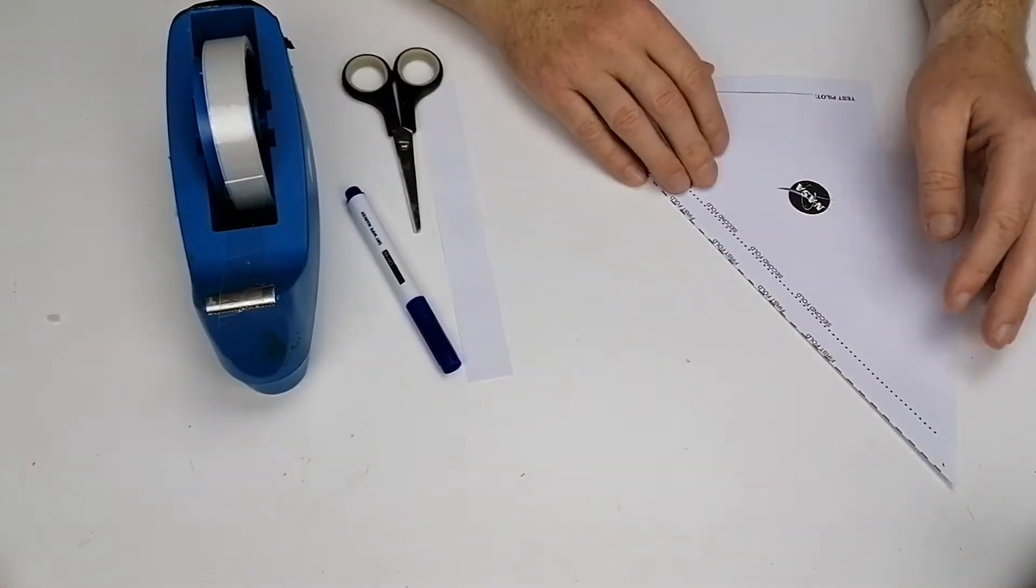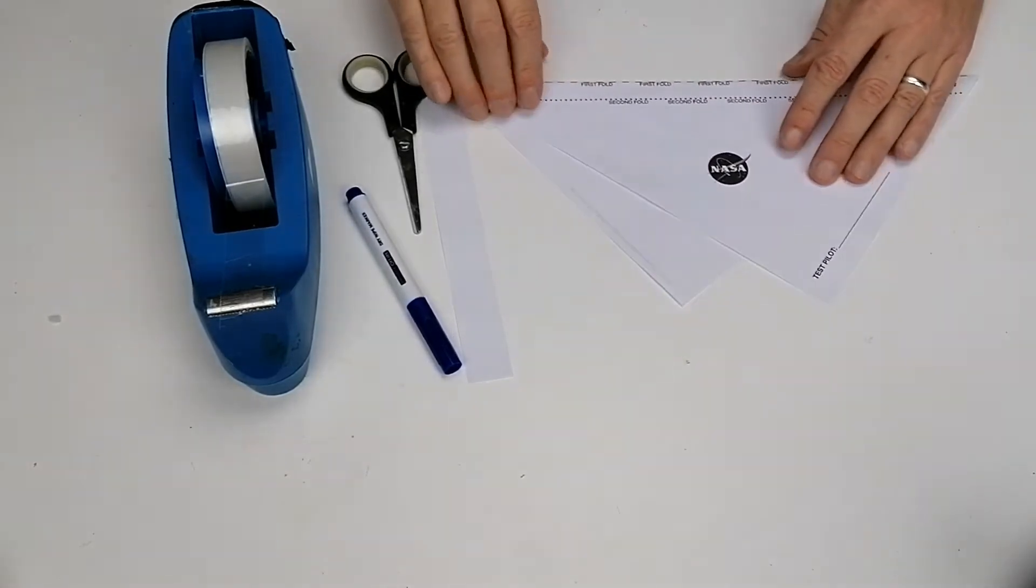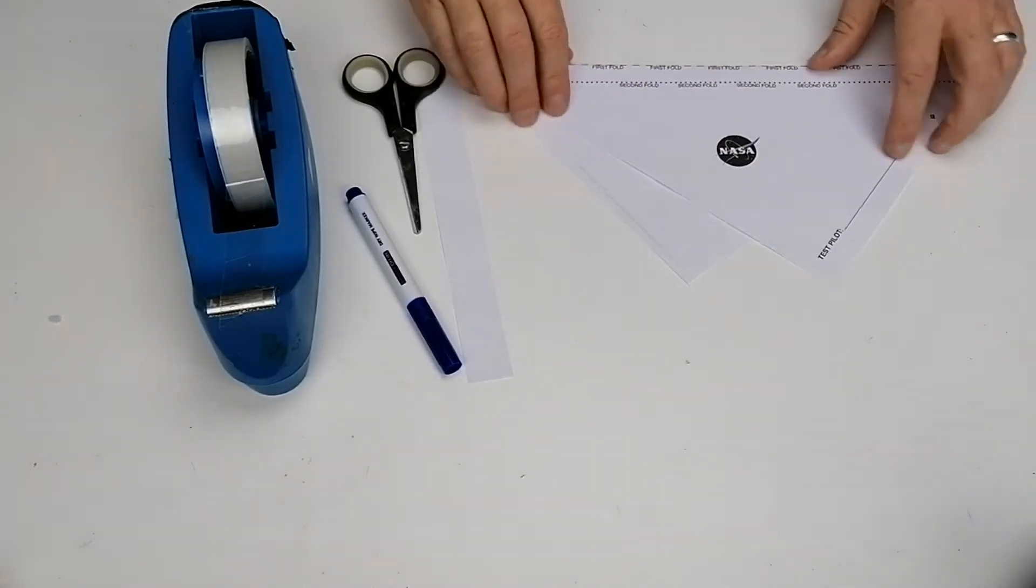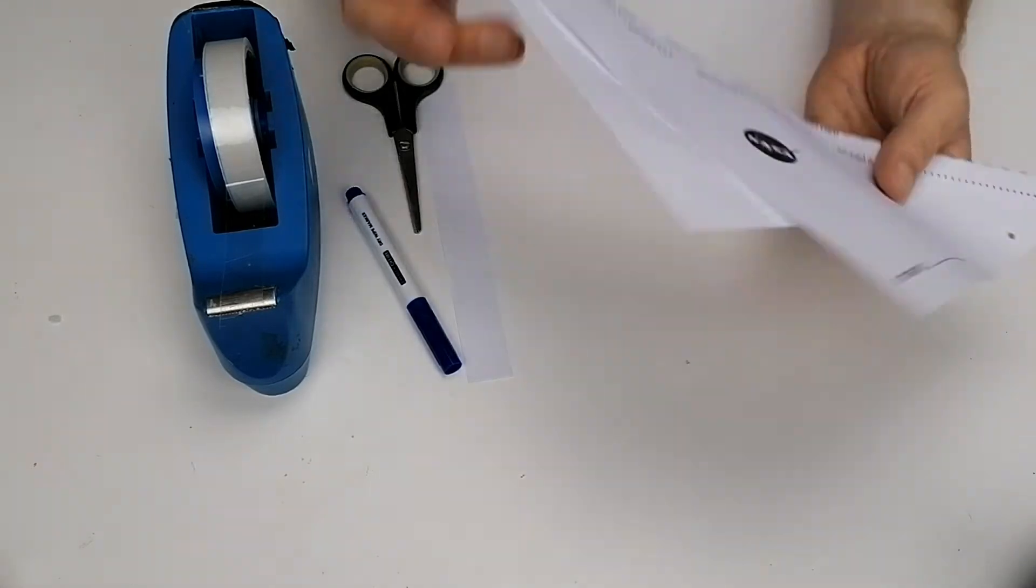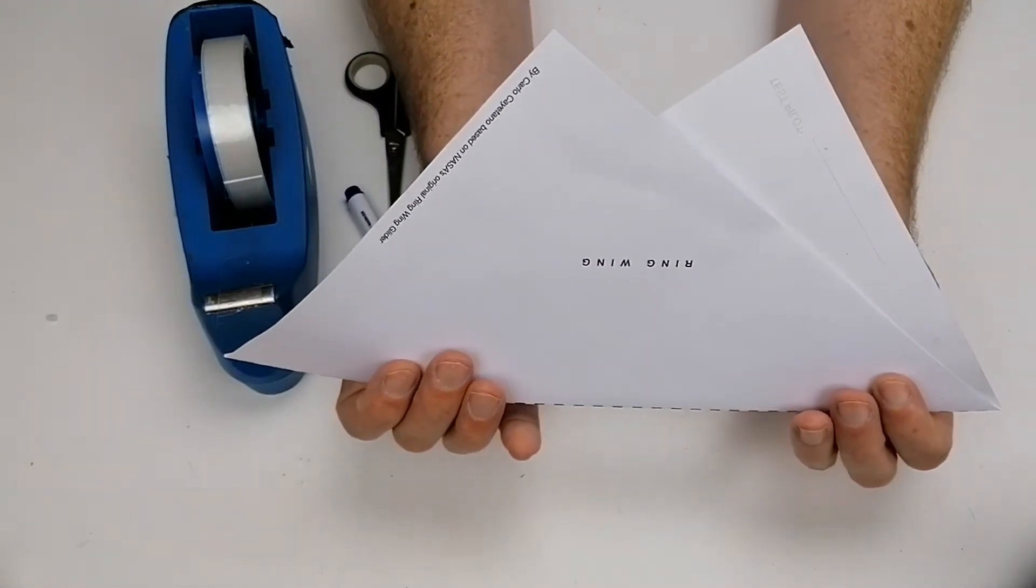So that's the first fold done. Turn it this way, you can see the first fold. Now if you put it up this way, you can see it looks like two kinds of little mountains there.